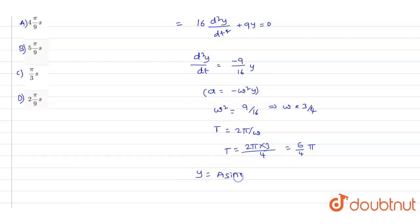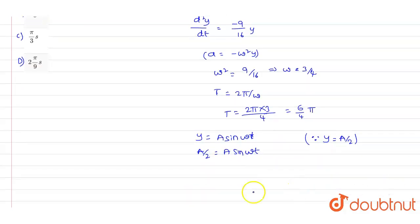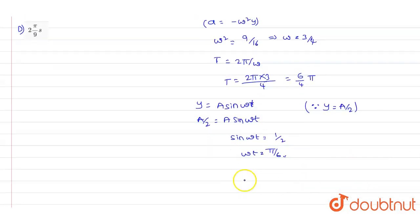So now we know equation y = a sin(ωt). According to this, y value we know is a/2. So I can write a/2 = a sin(ωt). So now sin(ωt) = 1/2, and ωt value will be equals to π/6, and t value will become...